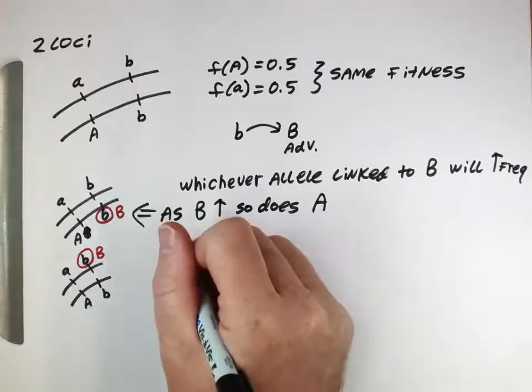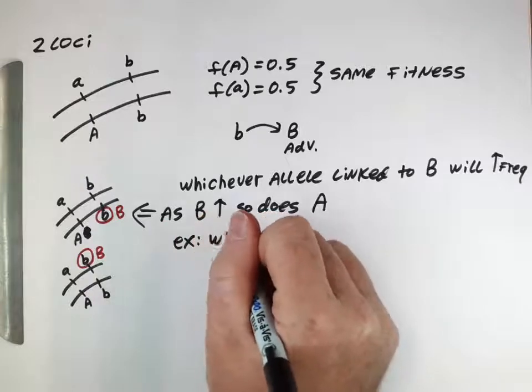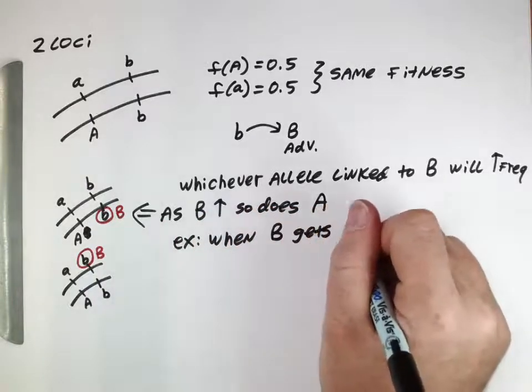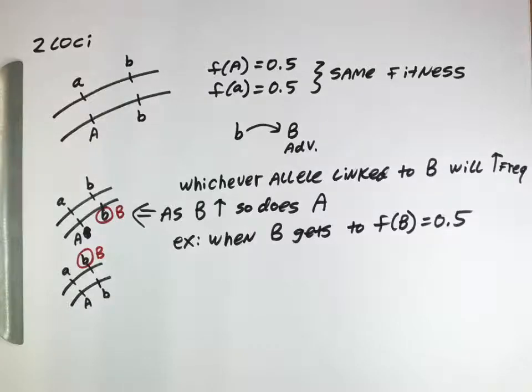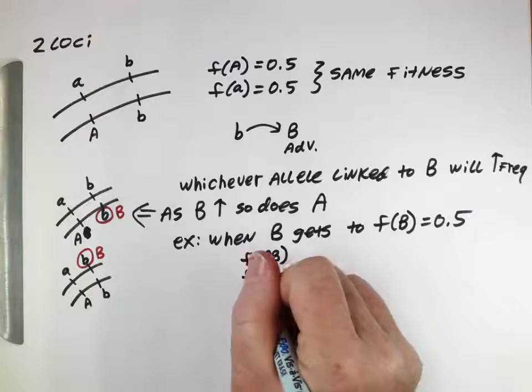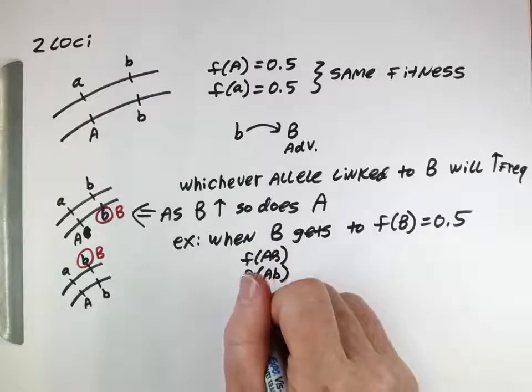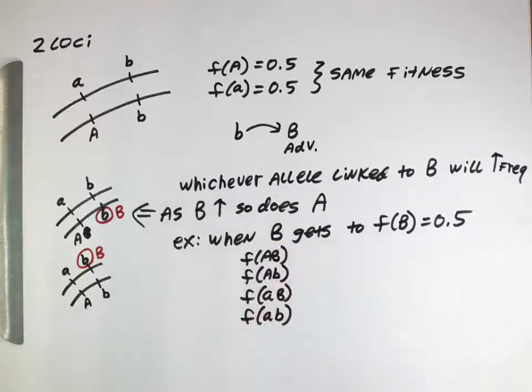And so now let's think about as this is increasing in frequency from an initial copy at some later points. For example, when the capital B allele gets to a frequency of 50%, so it's like on its way to fixation. It's halfway there. It started off as a single copy. It made it through the stochasticity at the beginning, wasn't lost, started to increase in frequency. Before it fixes, it gets to a point where it's about 50%, kind of on its way to fixation. Now let's think about how frequent these haplotypes will be in the population if we have no recombination, if we have total linkage between these two loci and there's no recombination.